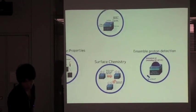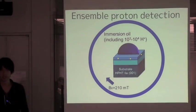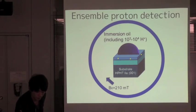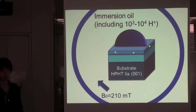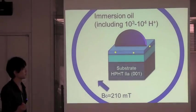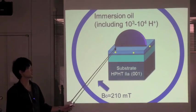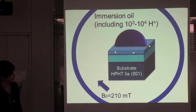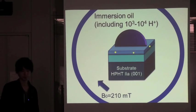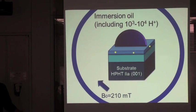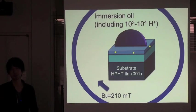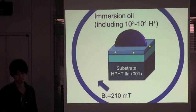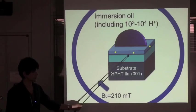So, finally, we demonstrated the ensemble proton detection. We put immersion oil on the diamond surface, which includes 1,000 to 10,000 ensemble proton spin in the detection area. We first tried to detect ensemble proton spin, not single proton spin, by using this NV center.